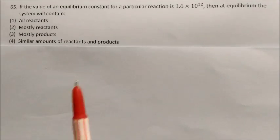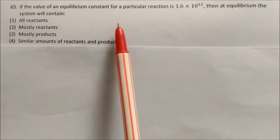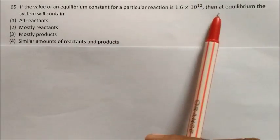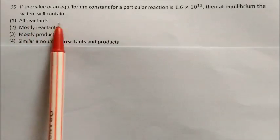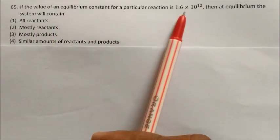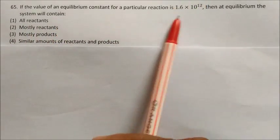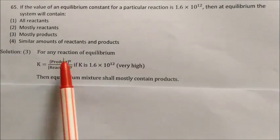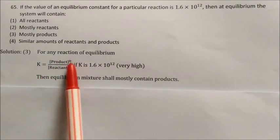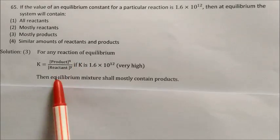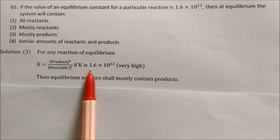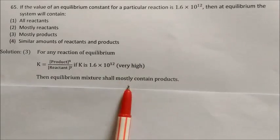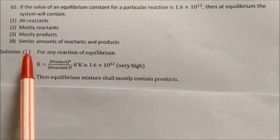Question: If the equilibrium constant for a reaction is 10^12, then at equilibrium the system will contain? This K value is very very high. For any reaction at equilibrium, K = [products]^x / [reactants]^y. Since K is very large, the equilibrium mixture will mostly contain products. Answer: option 3.